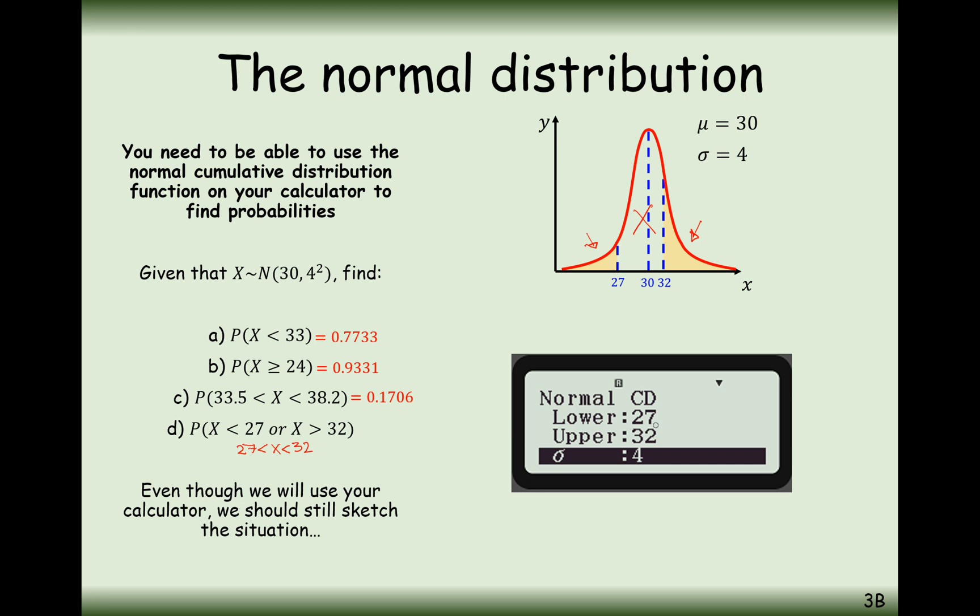So lower boundary of 27, upper boundary of 32, standard deviation of 4, mean of 30, and the answer we get is 0.464835. Then we just need to do a 1 takeaway subtraction to leave us with 0.5352 as the answer to this question.